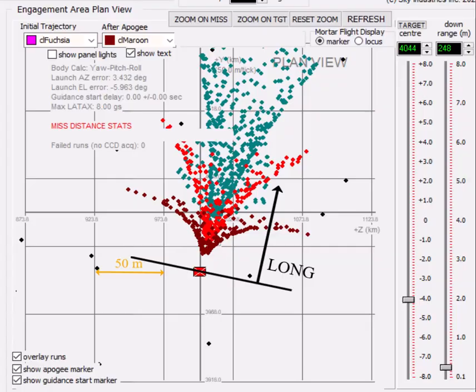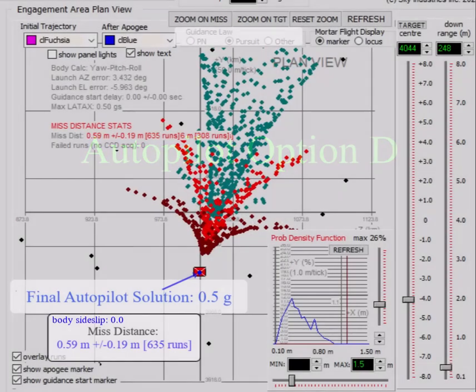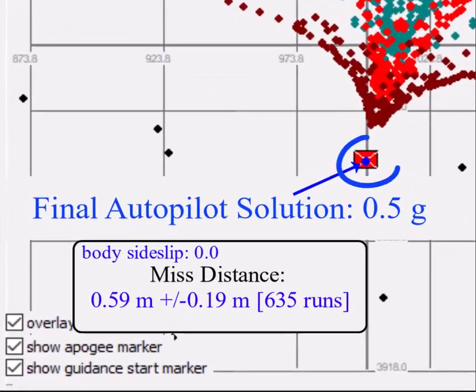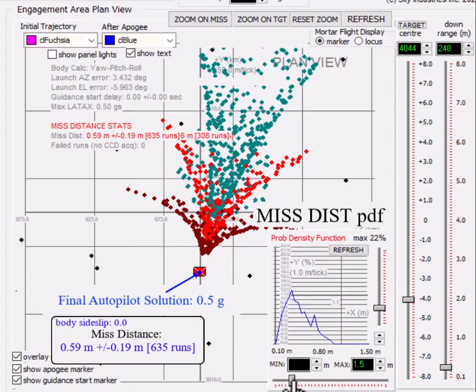So let's take a look at autopilot option D with no other changes. The mortar hit points are now this little blue dot entirely inside the target. The mean missed distance is 0.59 meters plus minus 0.19 meters in 659 runs. I added an inset to show the missed distance probability density function for each case.